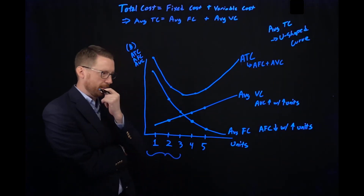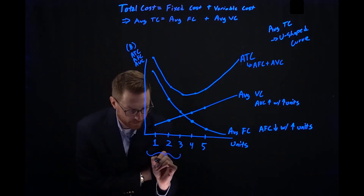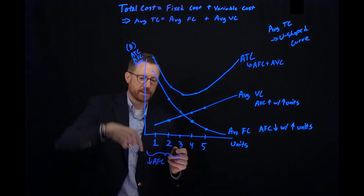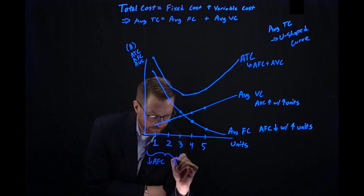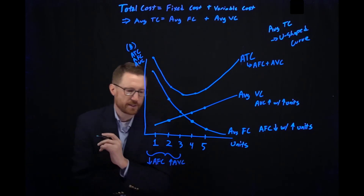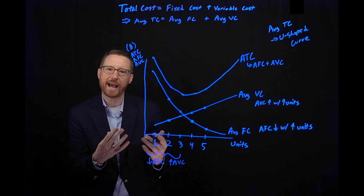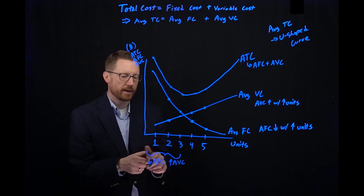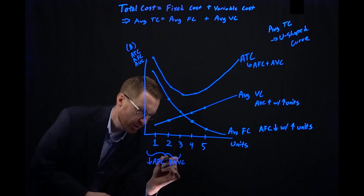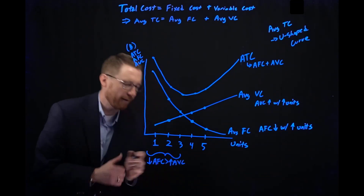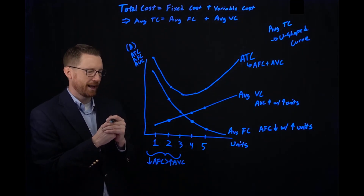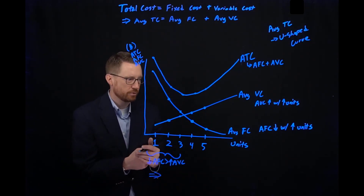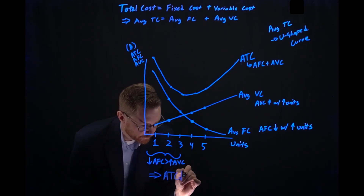If we think about the early parts, what's happening? Our average fixed cost is decreasing as we produce more, and our average variable cost is increasing. So the question is, which one wins out? At really low quantities, adding another unit and spreading out that fixed cost means we get really large decreases in average fixed cost. The decrease in average fixed cost outweighs the increasing average variable cost. That means that overall, as we're producing more, our average total cost is decreasing.